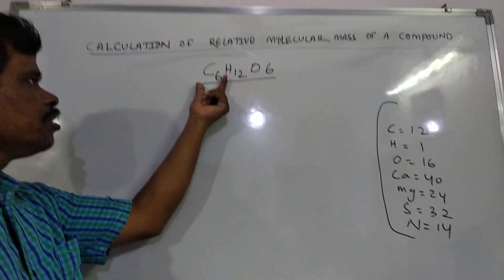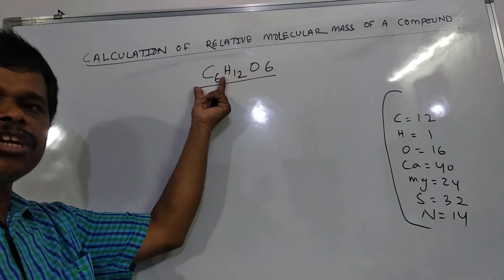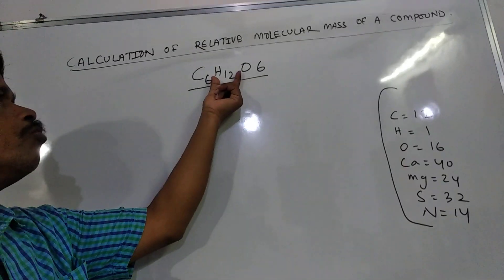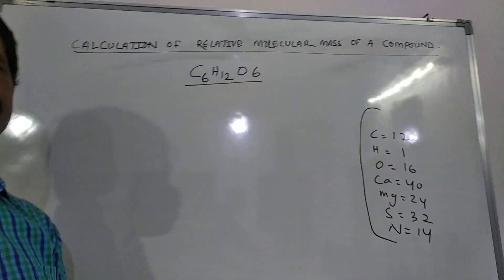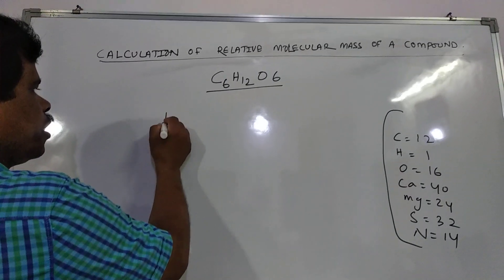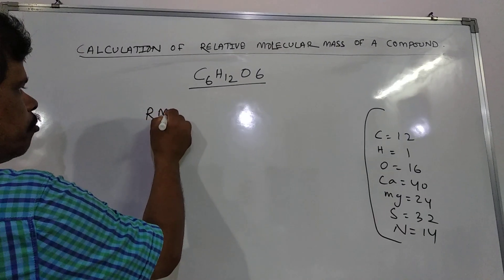This glucose contains C6, 6 atoms of carbon, 12 atoms of hydrogen, and 6 atoms of oxygen. Atomic mass is 16.